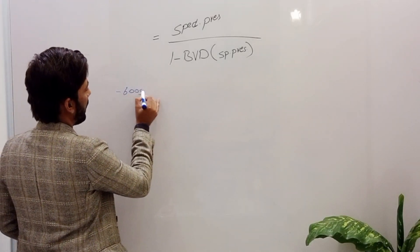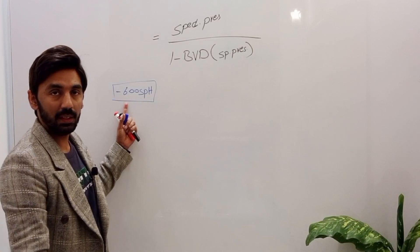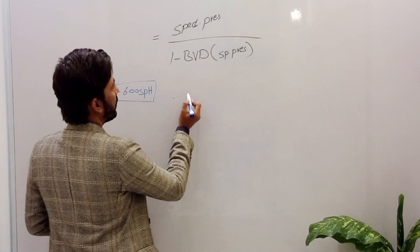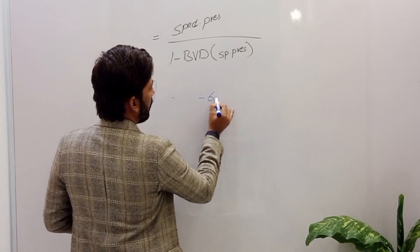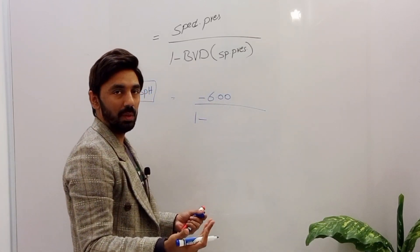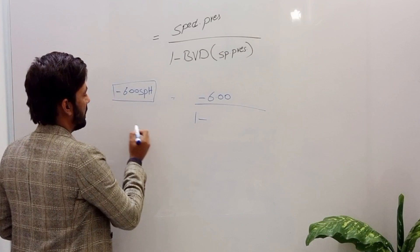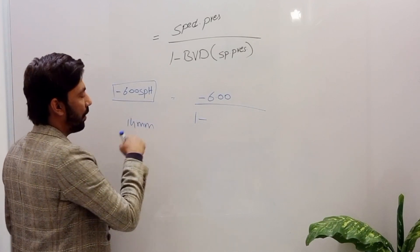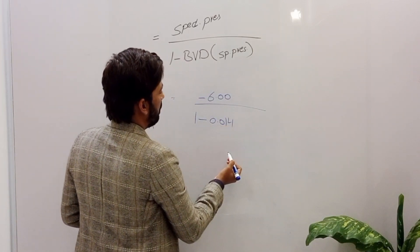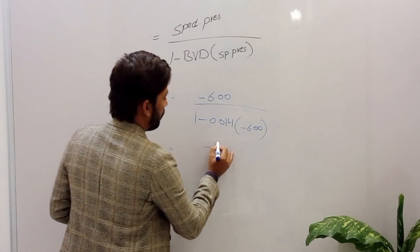Now let's take another example. Minus 6.00 spherical is the correction in spectacles and we need to convert this into a contact lens prescription. We put in the values: spectacle correction is minus six, back vertex distance is again 14 millimeters, which converts to 0.014 meters, and we multiply by the spectacles prescription of minus six.